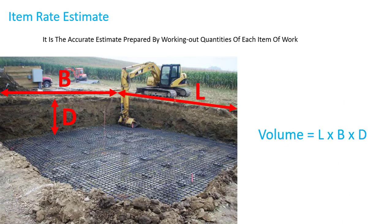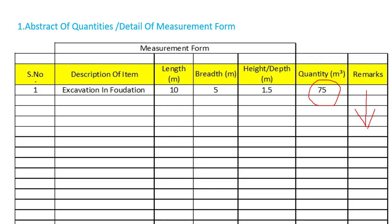For excavation work, we find out the total volume. In this form, we give item number one or serial number one, then the description — excavation in foundation. Then we give the length, breadth, and depth of the excavation, which could be in meters or feet. At last, we find out the total quantity. That's why it is called Item Rate Estimate — we create an estimate for each item, such as PCC, RCC, foundation, column, and so on.